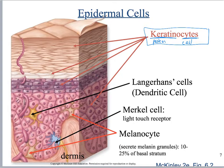All of these cells here are keratinocytes — they are the primary cell of the epidermis. They start down in the deeper layers in a cuboidal or columnar shape, go through mitosis, and gradually get pushed up to the surface where they will be sloughed off.